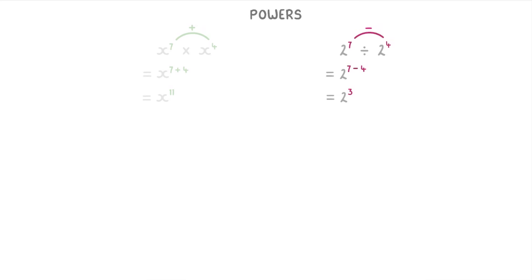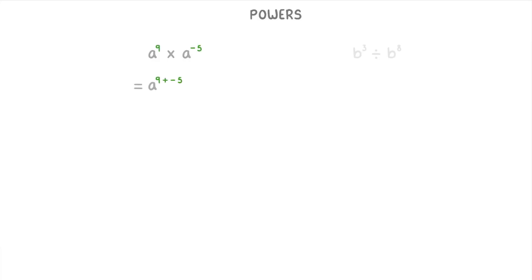One extra thing we can do when the base is a number is to work out its exact value. So because two to the power of three is just two times two times two, we can multiply them all together to find that the answer is eight. For a to the power of nine times a to the power of minus five, we again just add the powers. So a to the power of nine plus negative five, which is the same thing as a to the power of nine minus five, so a to the power of four. Then for b cubed divided by b to the power of eight, we just do b to the power of three minus eight, which is b to the power of negative five. And it doesn't matter that our power here is negative — that's absolutely fine.